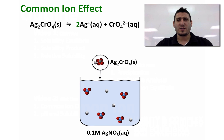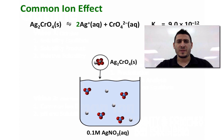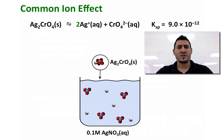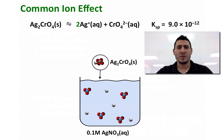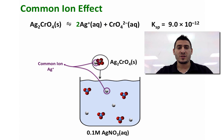Now, what is a common ion? Let's take the example of silver chromate that is going to be dissolved in a solution of silver nitrate. When we add silver chromate to the silver nitrate, we have the silver which is in common, and this is what we call a common ion.